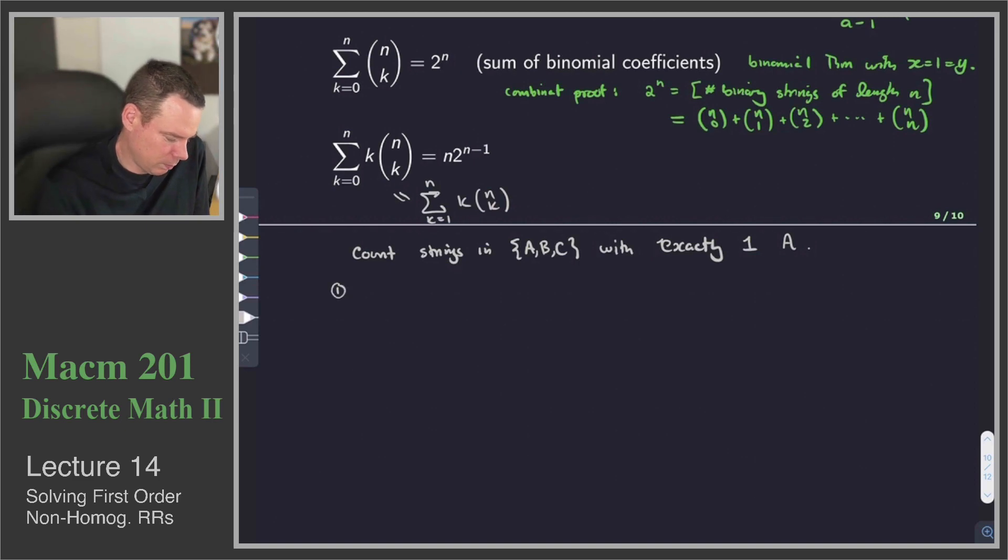Here's our first way to count them. We're going to choose where that a is going to be. Strings of length n with exactly 1 a. Choose position of a. Once you've chosen the position of a, the remaining n minus 1 spots can be filled with either b or c. So for each of those n minus 1 spots, you have two choices.